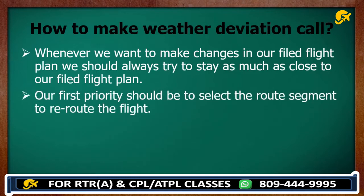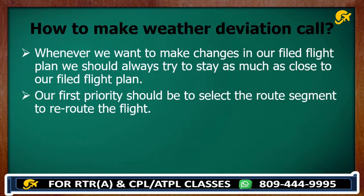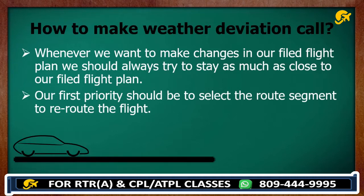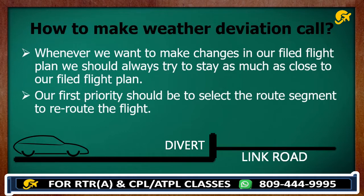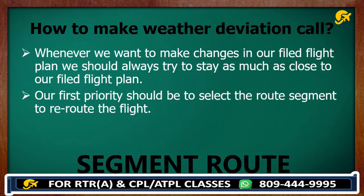Second, our first priority should be to select a segment route to reroute the flight. If we have to divert, we should choose whatever is already available on our route and avoid unplanned routes. Just like when driving a car and we divert from the main road, we prefer to take another link road rather than going through an open field — for safety and other reasons. Likewise in the sky, we prefer segment routes.